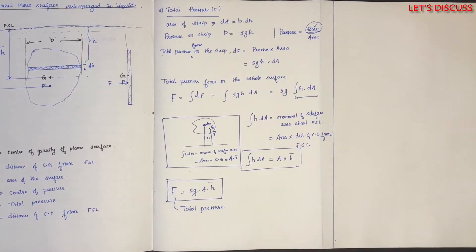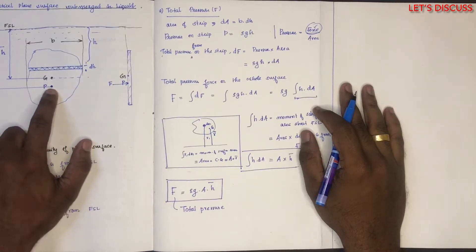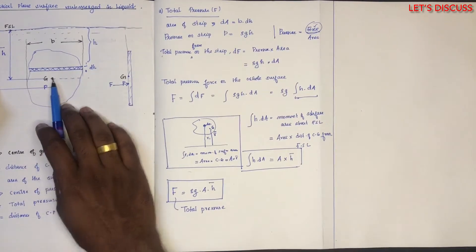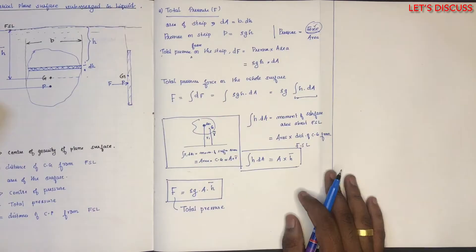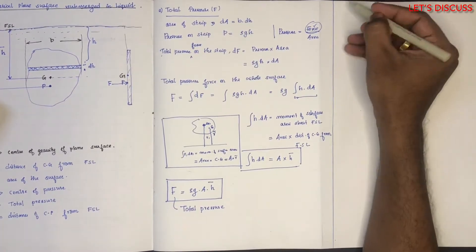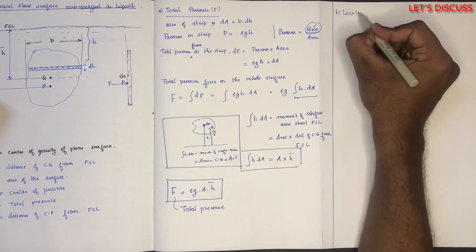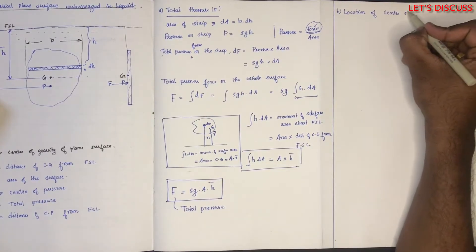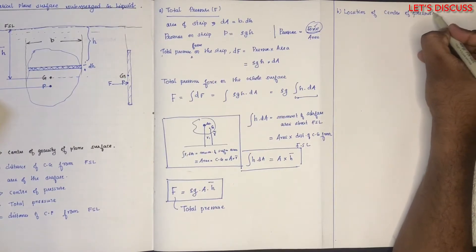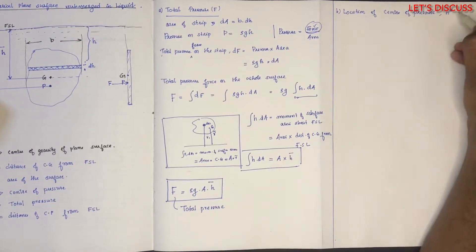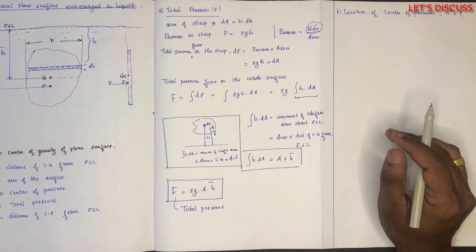We have the center of pressure. Where is the center of pressure? Location of center of pressure — H star, H star, H star. We will use the principles of moments.